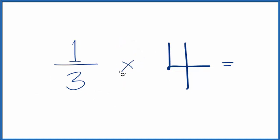So now we have one-third times four, and we could think of four as four over one. It's still four, but now we have numerators and denominators.